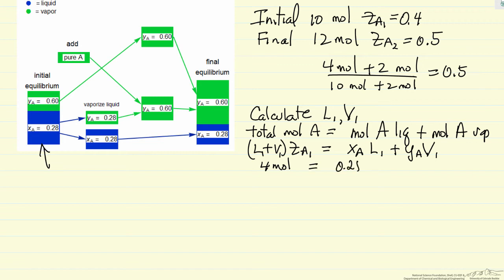XA is 0.28 times liquid, YA is 0.6, and to solve this for one variable, the number of moles of vapor is the total number of moles, which in this case is 10, minus the moles of liquid.